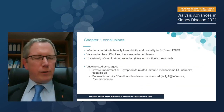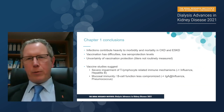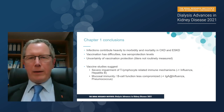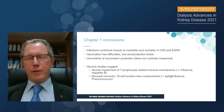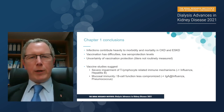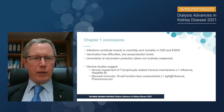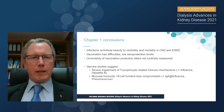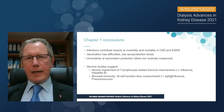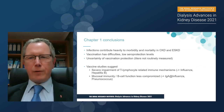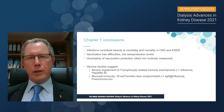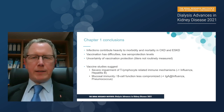To conclude the first chapter: infections contribute heavily to morbidity and mortality in our patients. Vaccinations have difficulties and there is uncertainty about vaccination protection — we cannot measure titers routinely. Vaccine studies suggest the severe impairment is on the side of the T lymphocyte or their activating mechanisms, relevant for influenza and hepatitis B. There is mucosal immunity and B cell function which is at least less compromised in CKD, and that is relevant for pneumococcus.